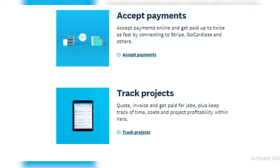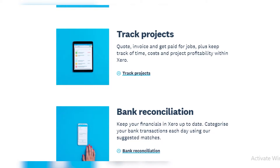Next, you can accept payments. You can get paid online easily using Stripe, GoCardless, and other online payment services that are now preferred by many people over traditional banking. You can also track your small business projects — code, invoice, and get paid for jobs, plus keep track of time, costs, and project profitability within Xero. This helps make your workflow streamlined and more efficient.